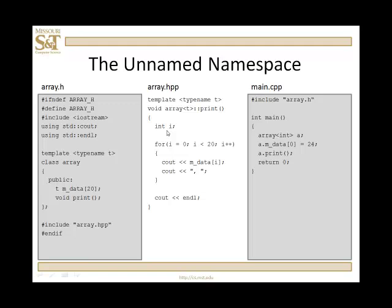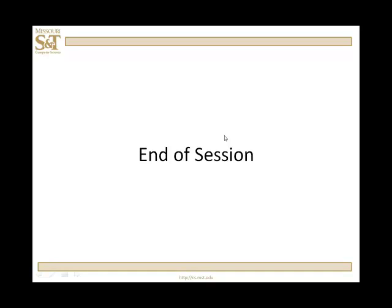What I've covered so far are namespaces that you create and name yourself. There's also the unnamed namespace. You have actually been creating unnamed namespaces all semester long — all the code you wrote goes into what is called the unnamed namespace. When you create a class like array and write code for its member functions, the compiler knows which array you're referring to in main because it looks in the unnamed namespace, which is automatically created when you write a program. That's the essence of namespaces.